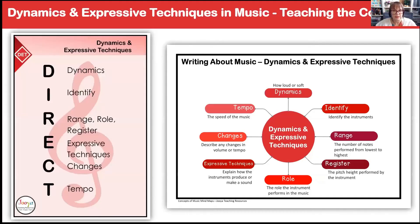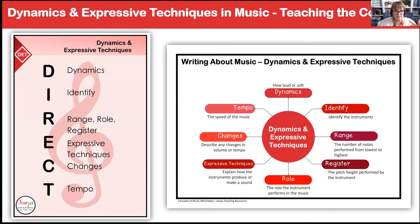Just to recap: if you are doing a dynamics and expressive techniques question, the six things you need to remember spell DIRECT - Dynamics, Identify, Range/Role/Register, Expressive techniques, Changes, and Tempo. The main things you need are dynamics, identify your instruments so you can talk about expressive techniques, then talk about changes and tempo. If you can get range, role, and register in there as well, even better - but sometimes you don't always get there.